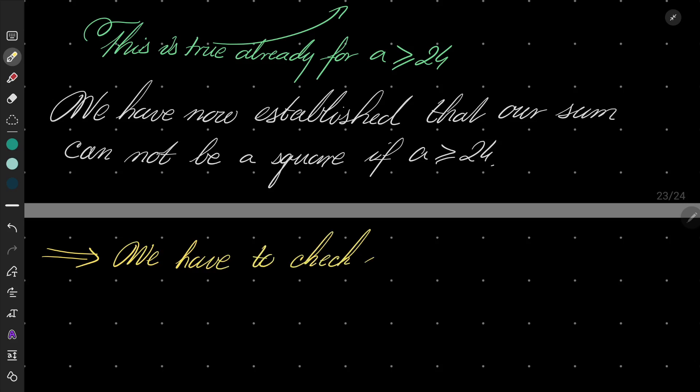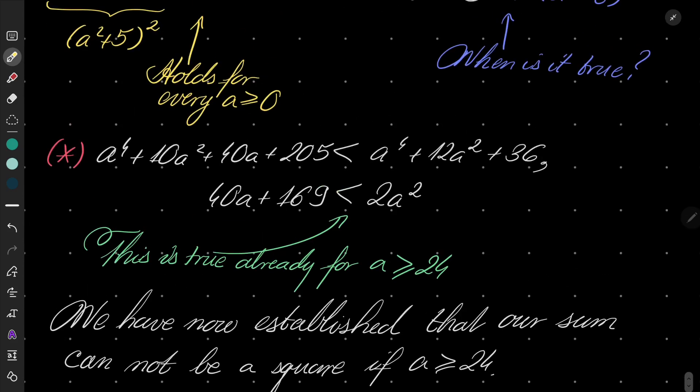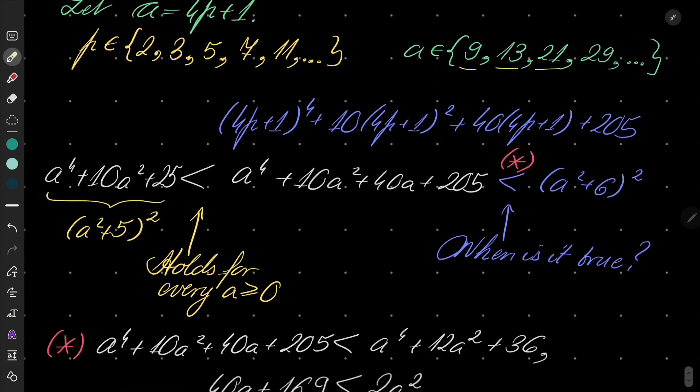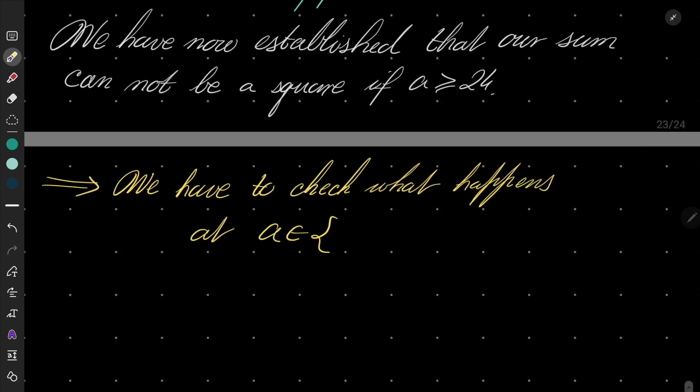We have to check what happens for a in the set. Let's go back. 9, 13, 21.